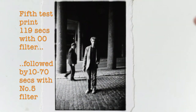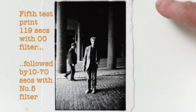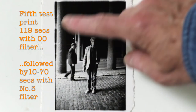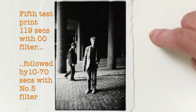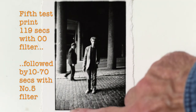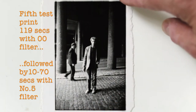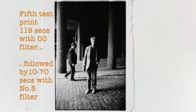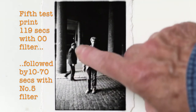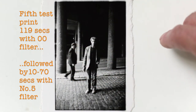Now in this test print here I've increased the exposure time with the 00 filter to 119 seconds overall, and then I've given a test with the number 5 filter at 10, 20, 30, 40, 50, 60, 70 seconds to try and see how the blacks are coming in now. And I can see that at about 40 seconds or so, somewhere around here, I'm getting the blacks that I want without overdoing them.